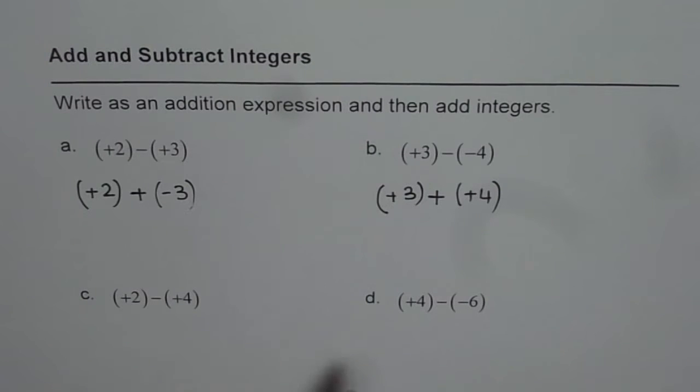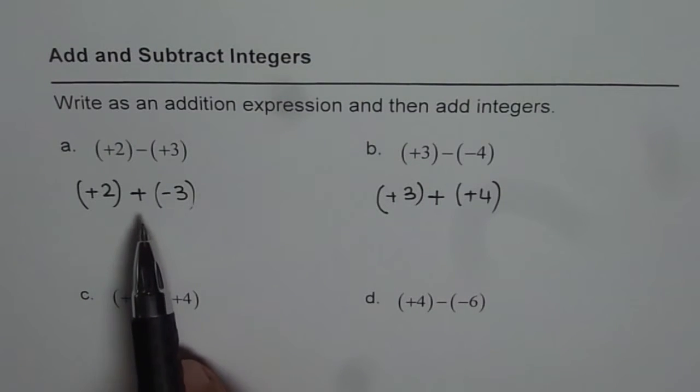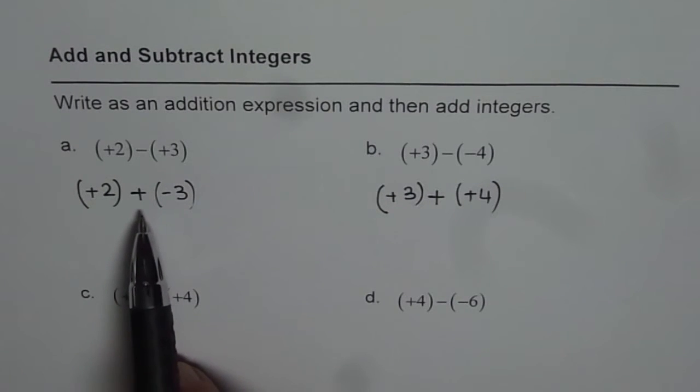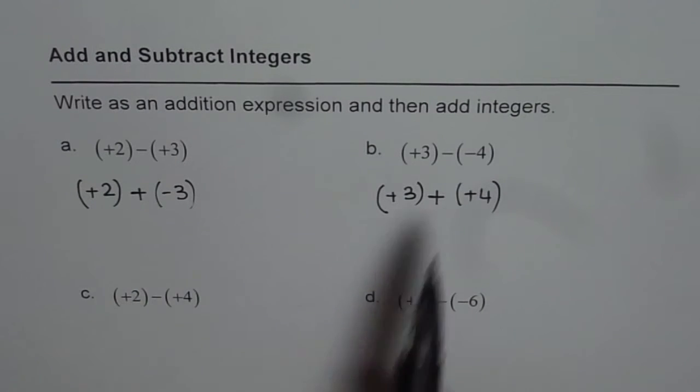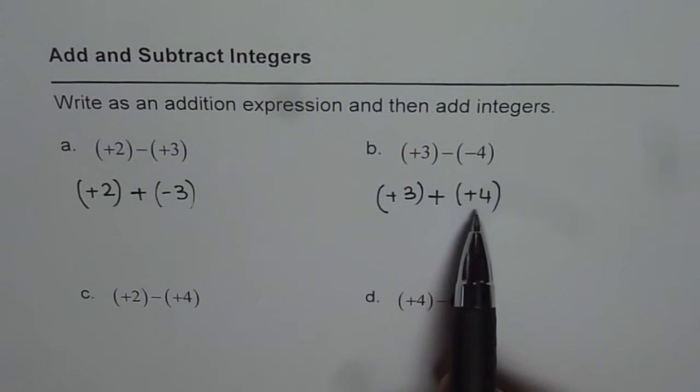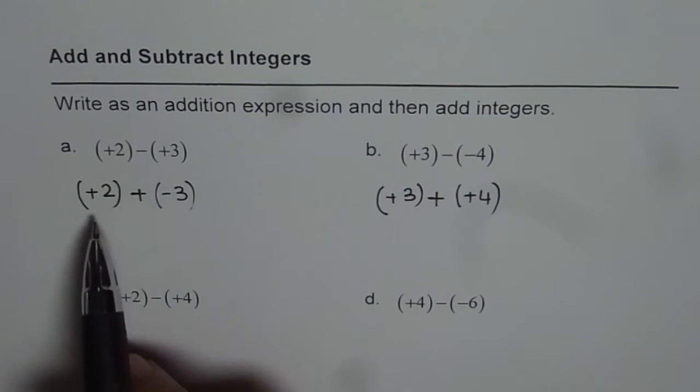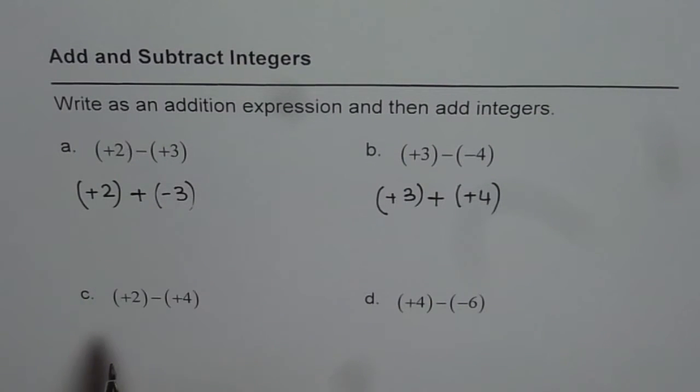So, I think the first step is clear. How to write your subtraction as an addition. So, whenever you do that, you have to reverse the sign. So, you made (+3) as (-3) and (-4) as (+4). Now, we will use counters to add our expression.